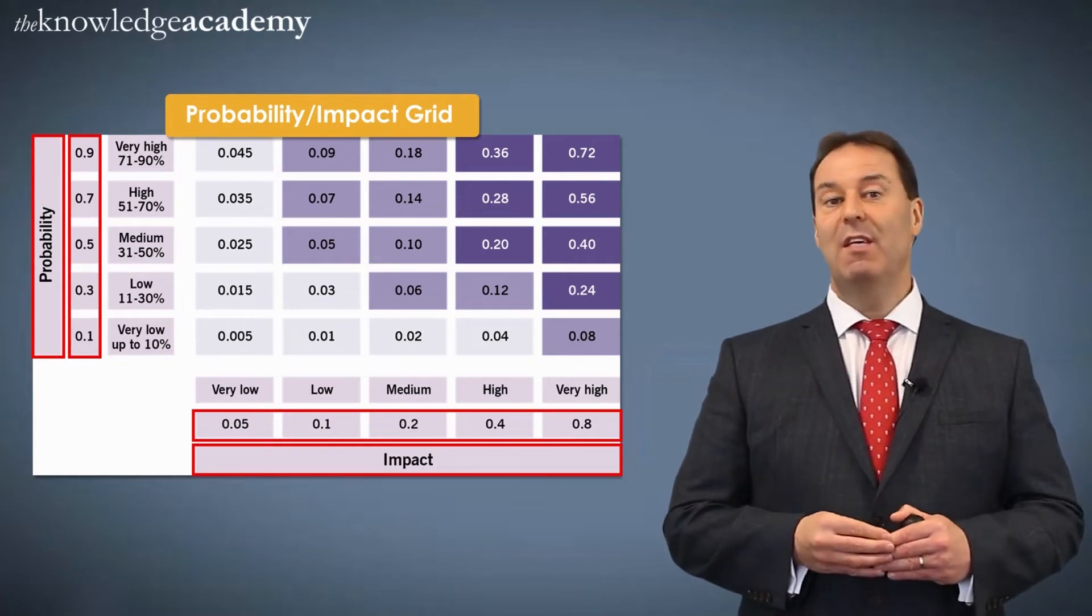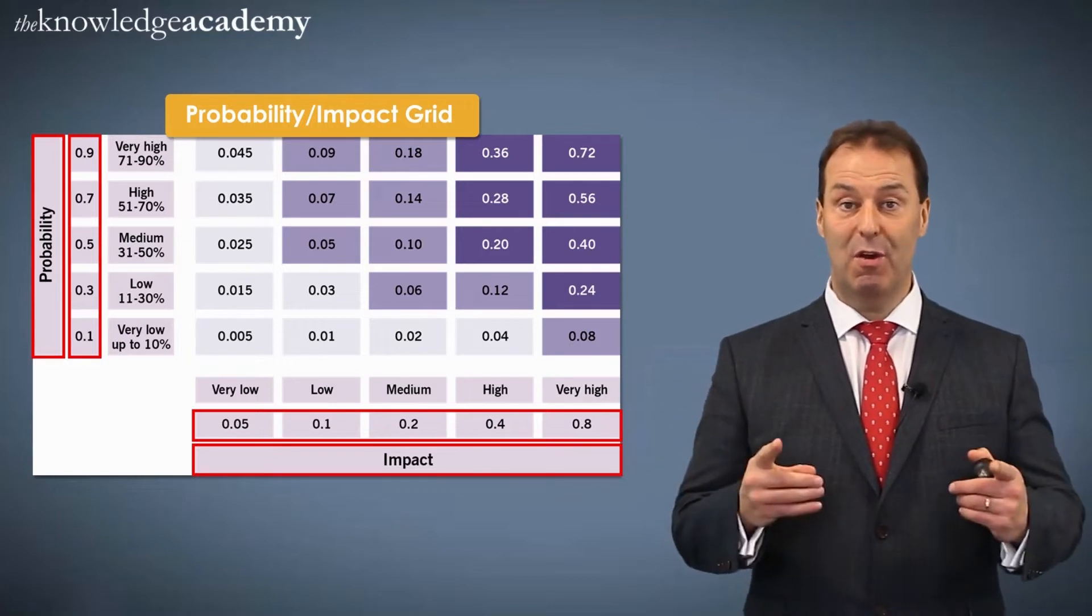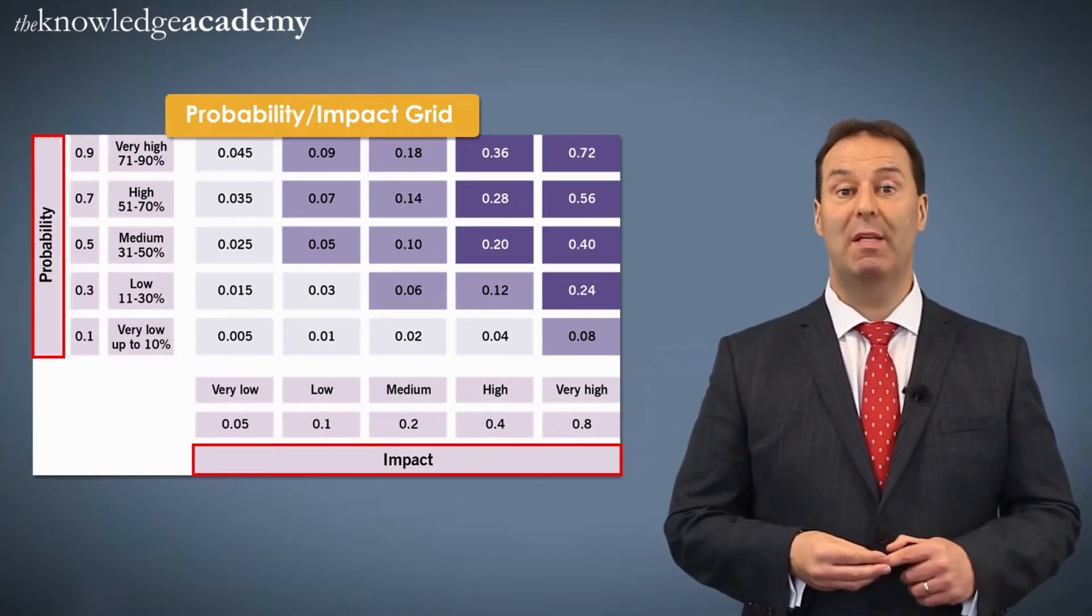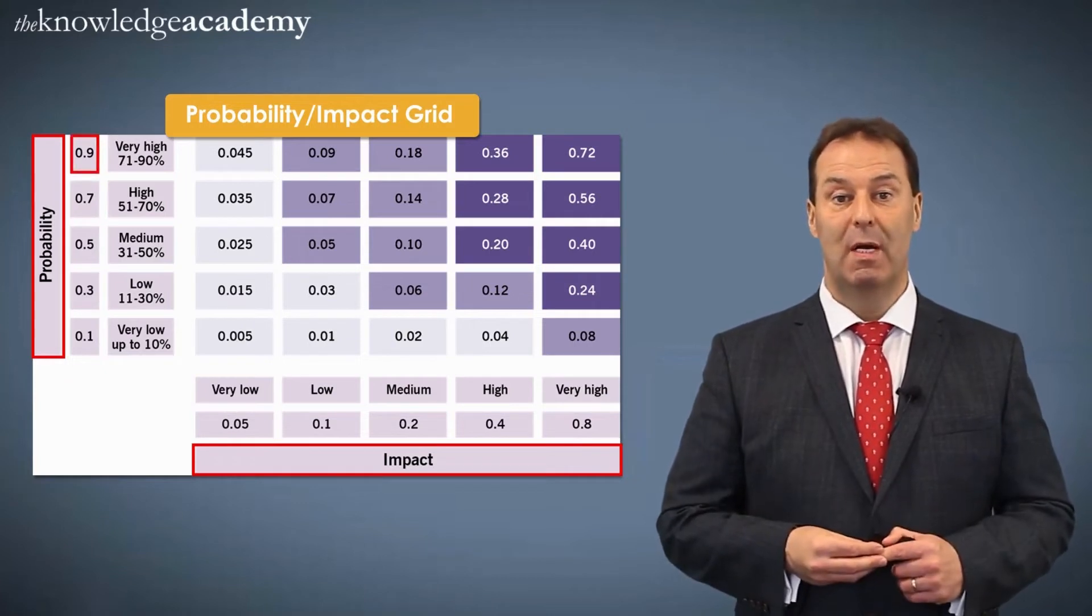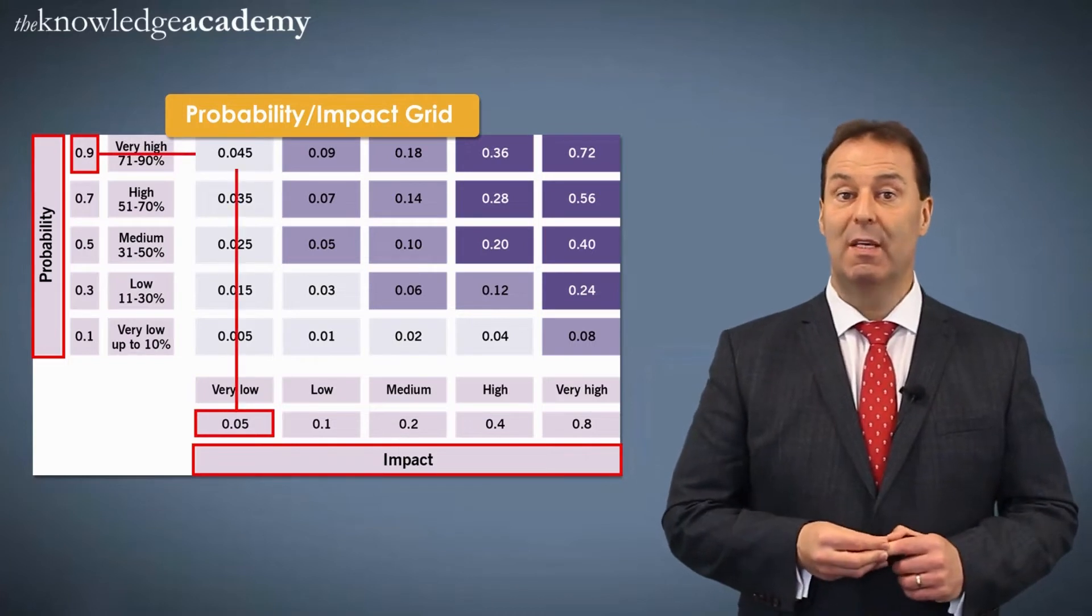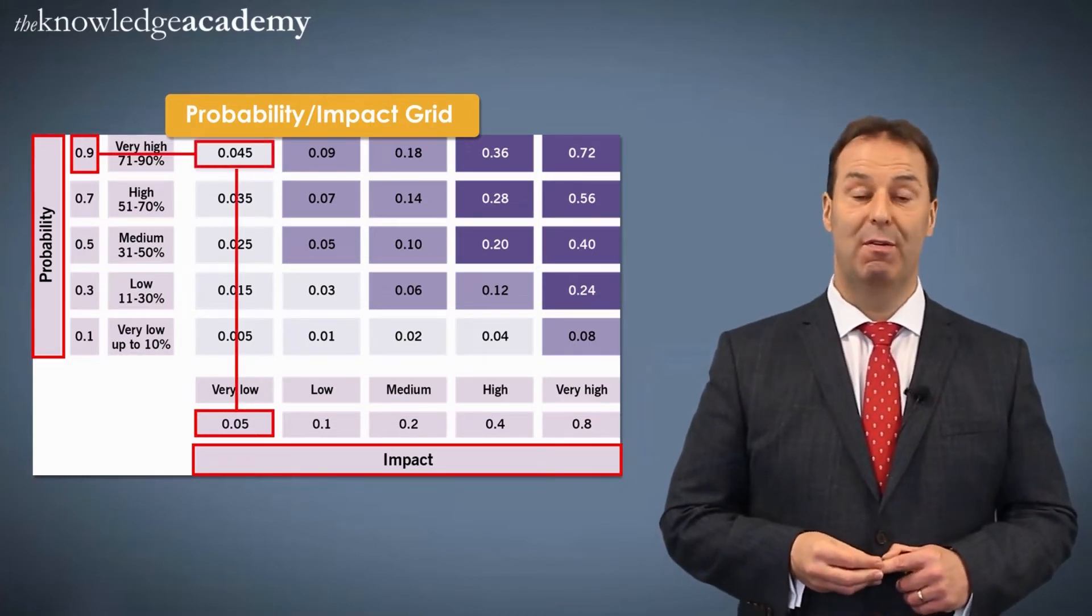When you take these two values, one from probability and one from impact, and where they cross over, you multiply them. So for example, if you were to take the probability value of 0.9 and the impact value of 0.05, where the two meet in that grid, you get a ranking value of 0.045.